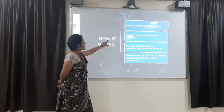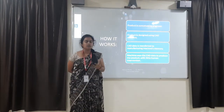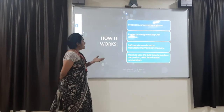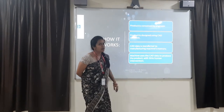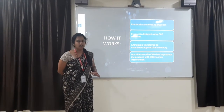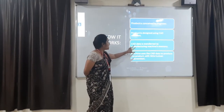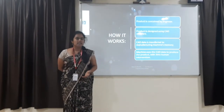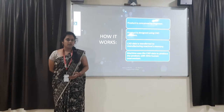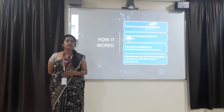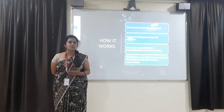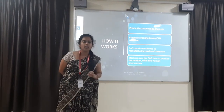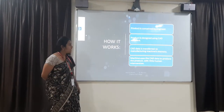How does it work? First, the product is conceived by the engineer — which product you want to produce must be conceived. Then the product is designed using any CAD software with dimensions provided. CAD data is transferred to manufacturing machines using CNC — Computer Numerical Controlling — integrating the computer with manufacturing using machine language. The machine uses the CAD data to produce the product with limited human involvement.